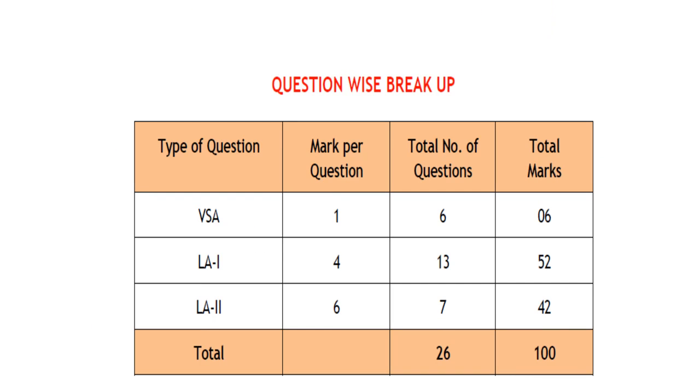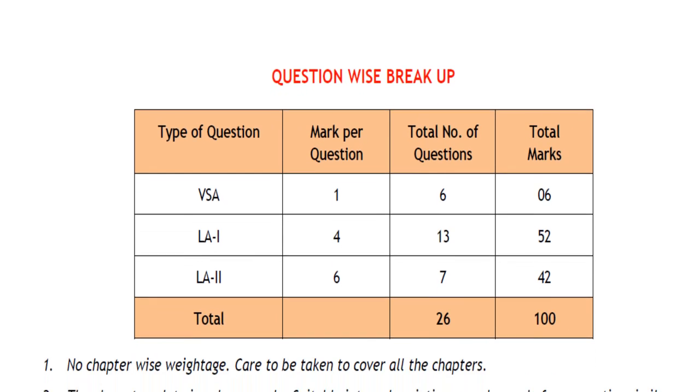Here you can see the question-wise breakup. There are basically three types of questions. Very short answer questions carry 1 mark each, with 6 questions totaling 6 marks. Long answer type 1 questions carry 4 marks each, with 13 questions totaling 52 marks. Long answer type 2 questions carry 6 marks each, with 7 questions totaling 42 marks. So there will be 26 questions for 100 marks in total.